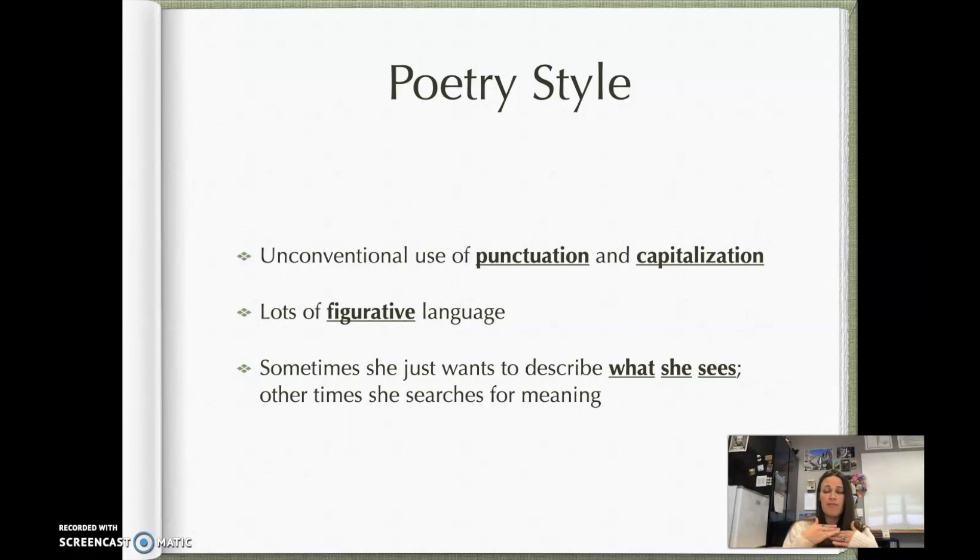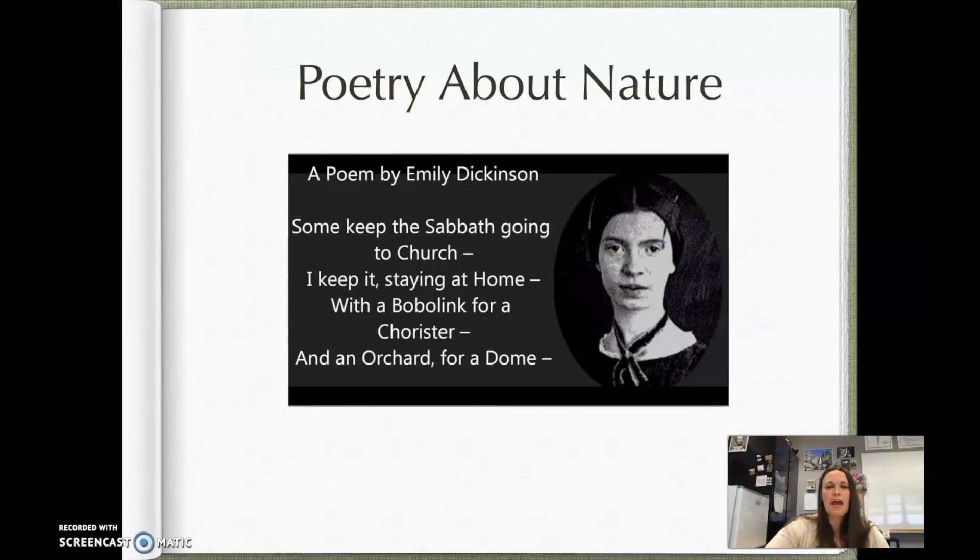There are a lot of similes, a lot of metaphors, a lot of alliteration and all sorts of stuff. Sometimes she describes simply what she sees. So her poetry could be very surface level and just say, hey, here is a poem about this tree I'm looking at and it's beautiful. Or other times she makes comparison and she's searching for meaning. And so she might be observing something, but then ultimately trying to think about how to make meaning out of what she's looking at. A lot of her poetry, like I said, is about nature.